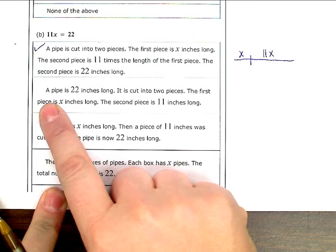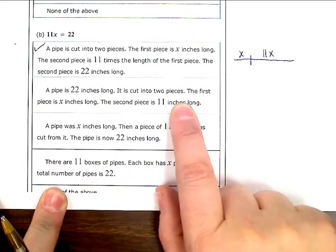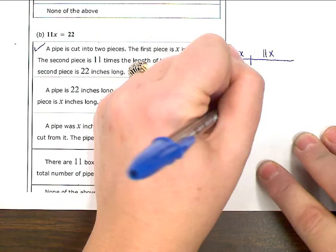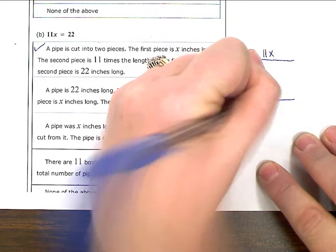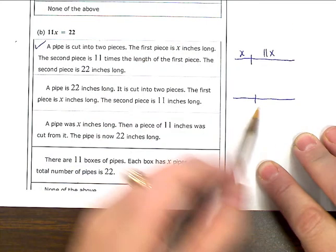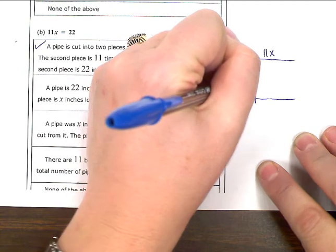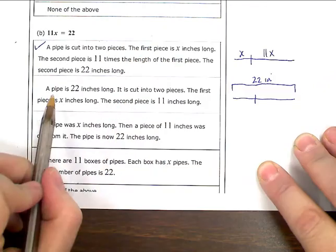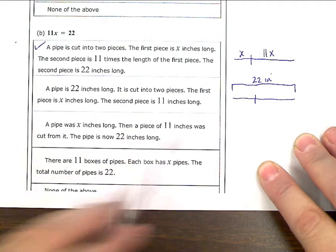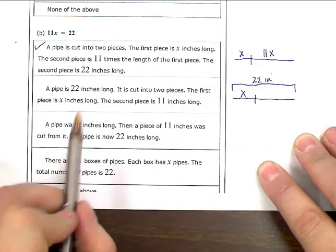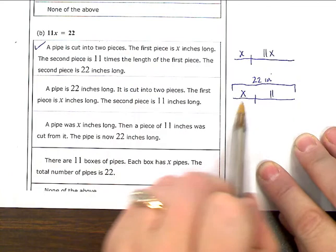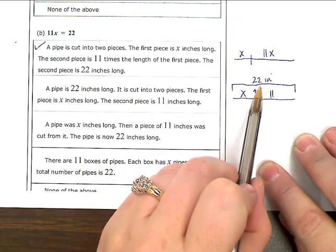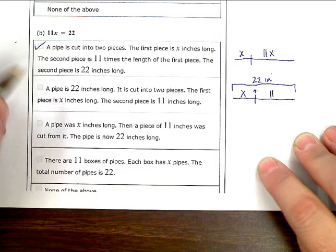The next one, a pipe is 22 inches long. It's cut into two pieces. The first piece is x inches long, and the second piece is 11. Think of this one. Here's my pipe. I'm going to cut it right there. Total end-to-end, it's 22 inches. The pipe is 22 inches long. We cut it into two pieces. The first piece is x. The second piece is 11. End-to-end, this would be an addition situation, right? x plus 11 equals 22, not x times 11, or 11x. So we're not going to mark that one.